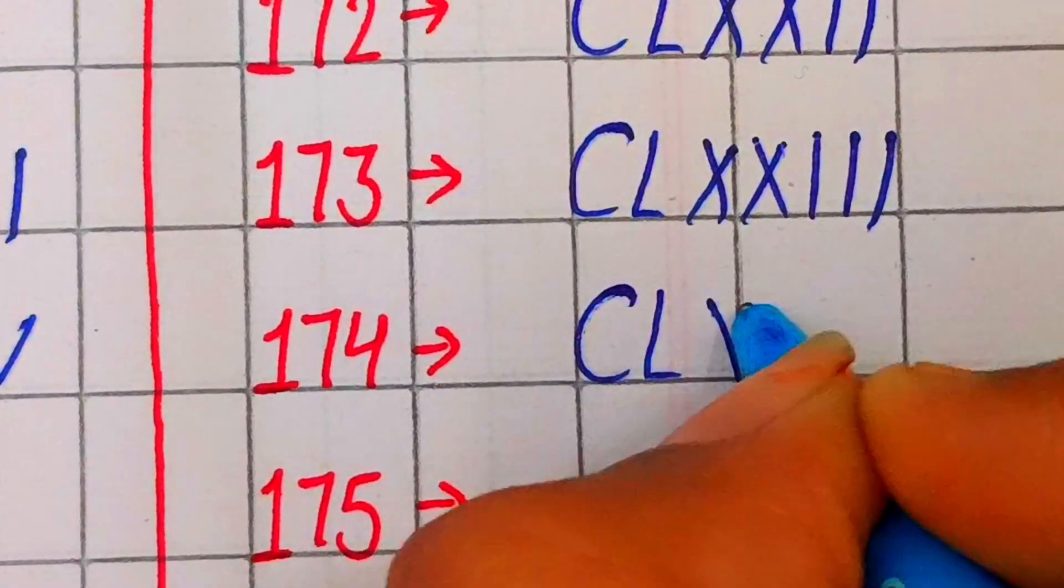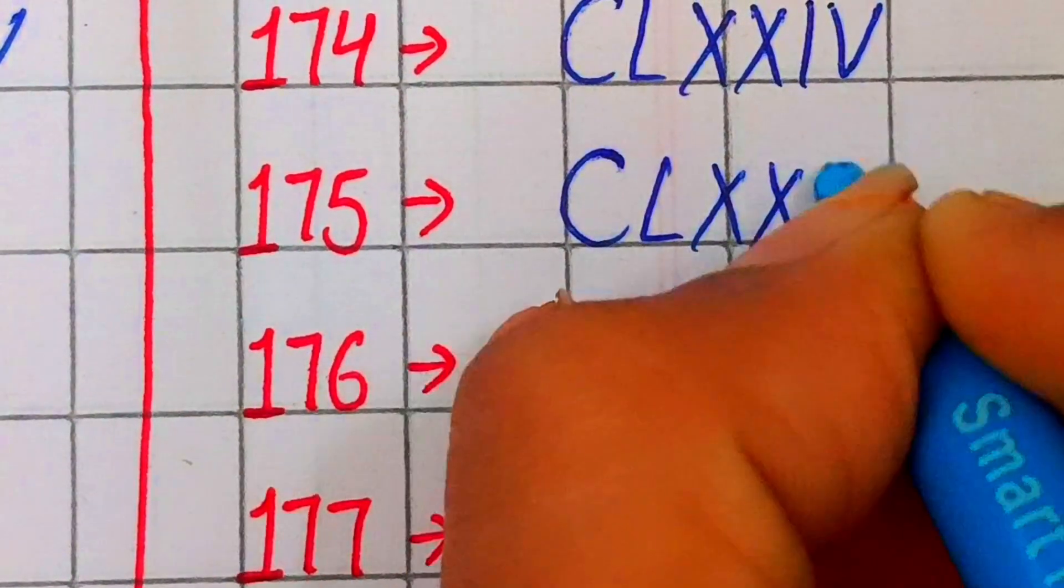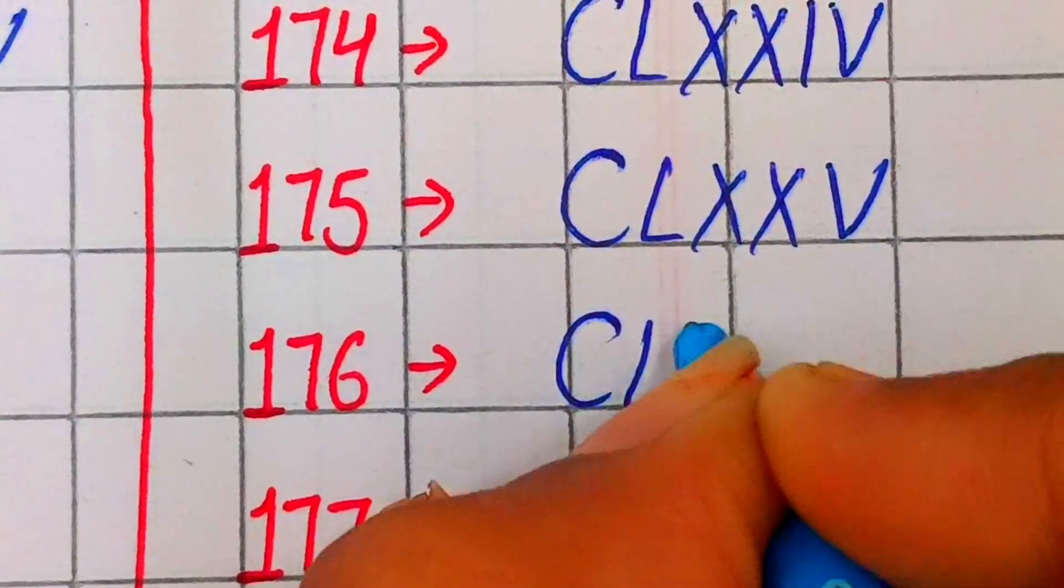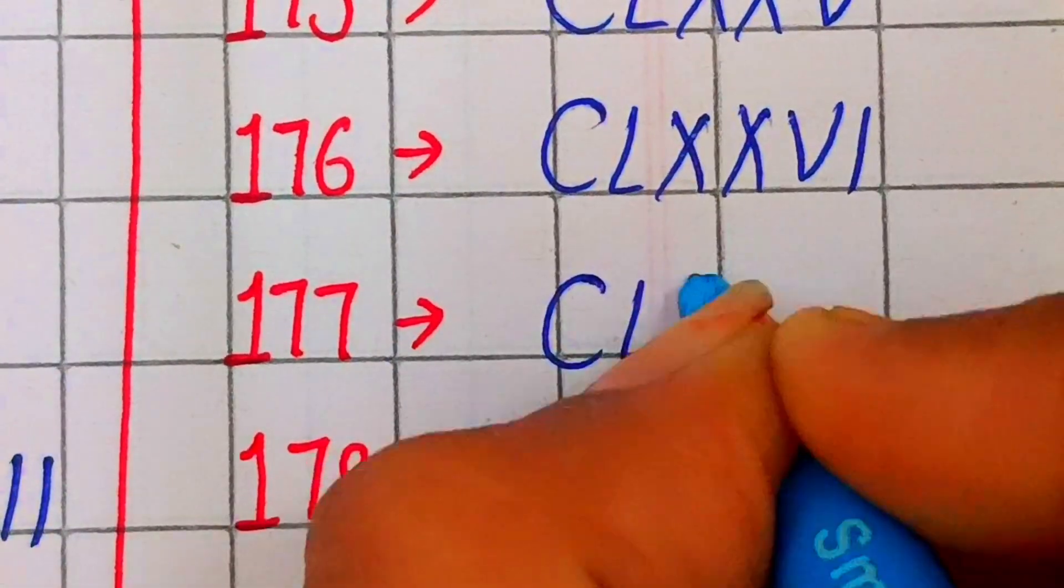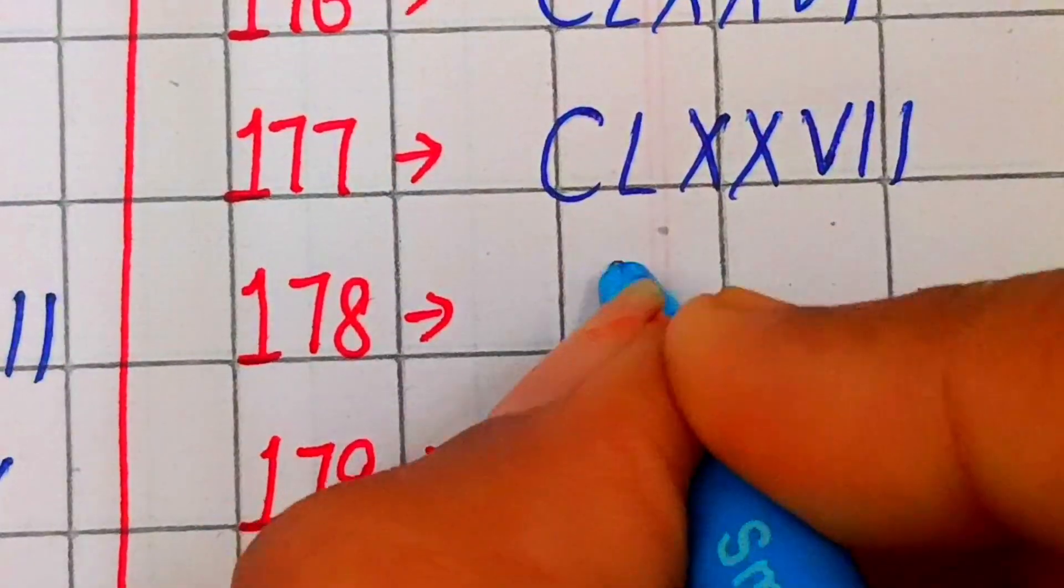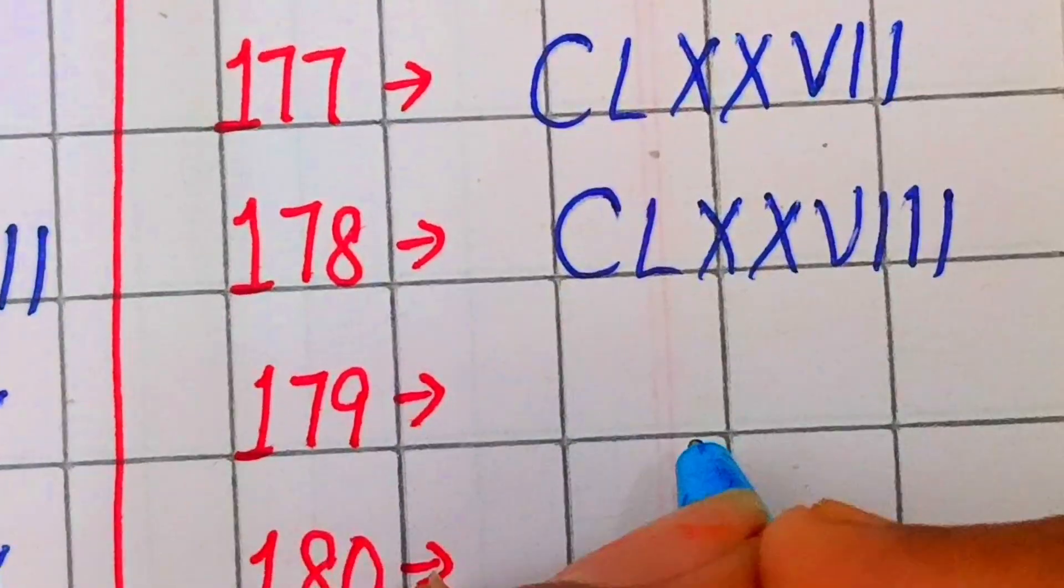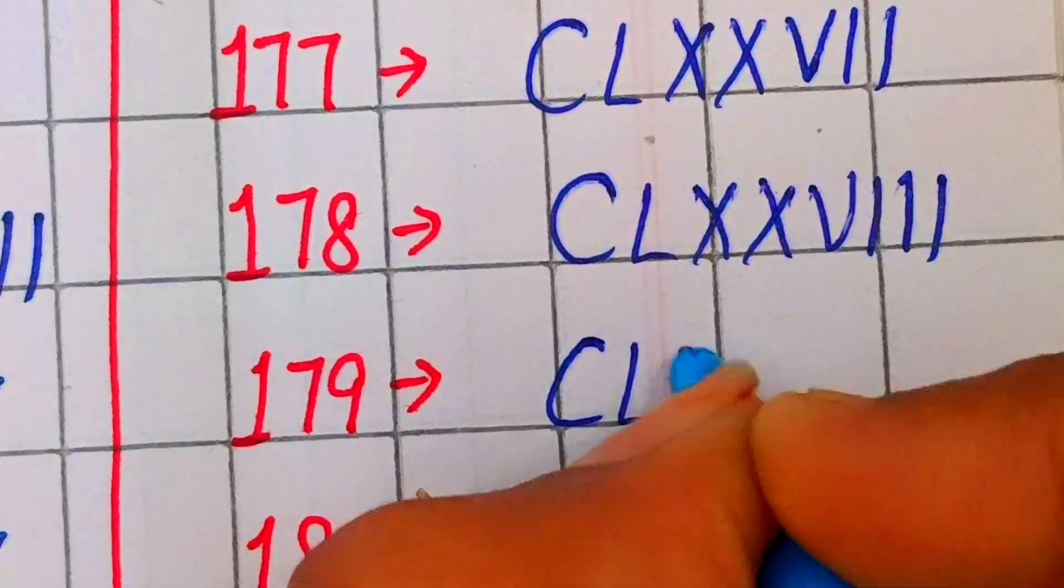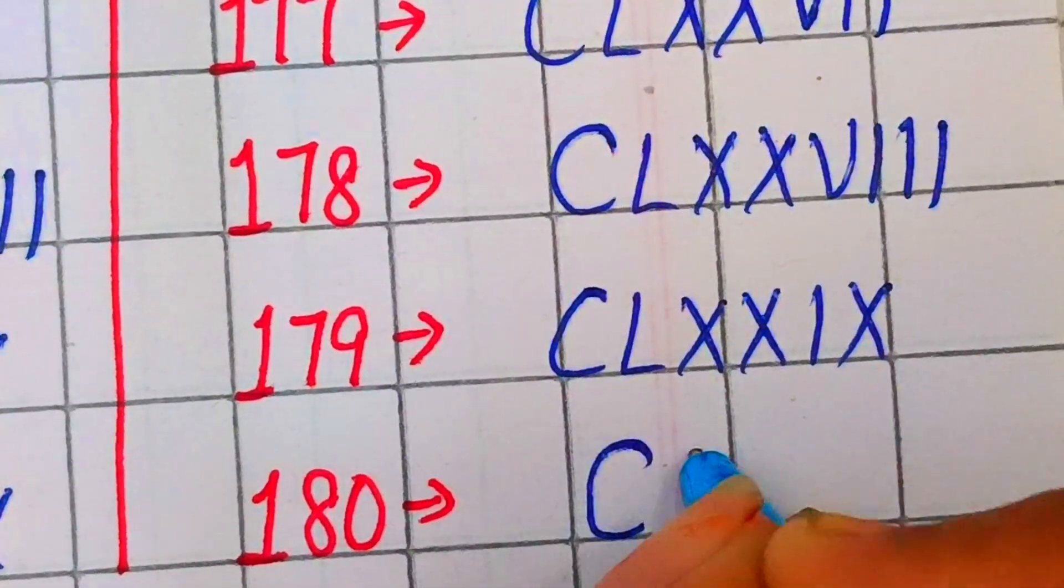174 CLXXIV, 175 CLXXV, 176 CLXXVI, 177 CLXXVII, 178 CLXXVIII, 179 CLXXIX, 180 CLXXX.